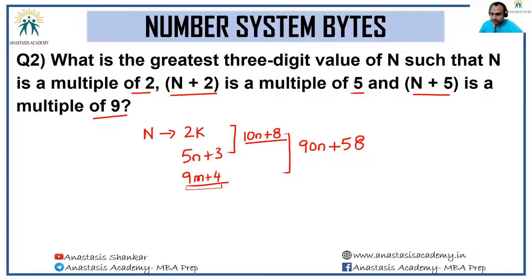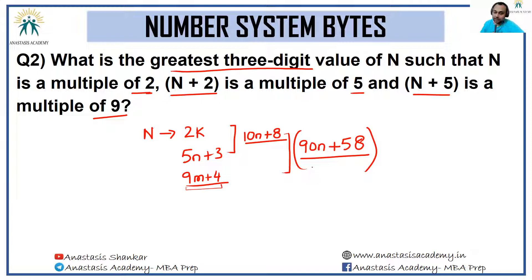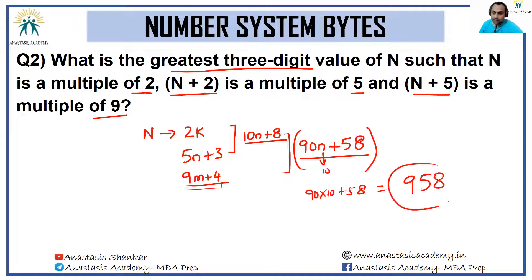This number 58 satisfies all properties: it is even; add 2 and it becomes a multiple of 5; add 5 and it becomes a multiple of 9. So the kind of number we seek is represented by 90n + 58. This process is called combining. The greatest three-digit value is found by setting n = 10: 90×10 + 58 = 958.